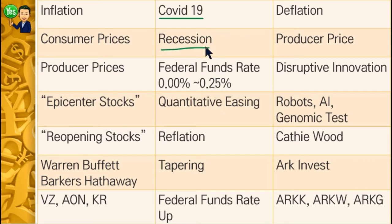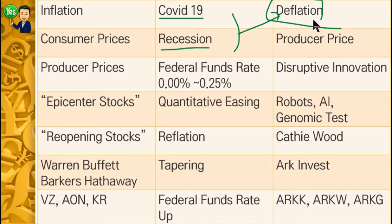Once the recession came, all stores were locked down and closed. So there was less cash in the market, which caused deflation. In this condition, everybody was suffering. So the FED — the Federal Reserve Bank — lowered its rate. We call it the federal funds rate, or in short, the FED rate.